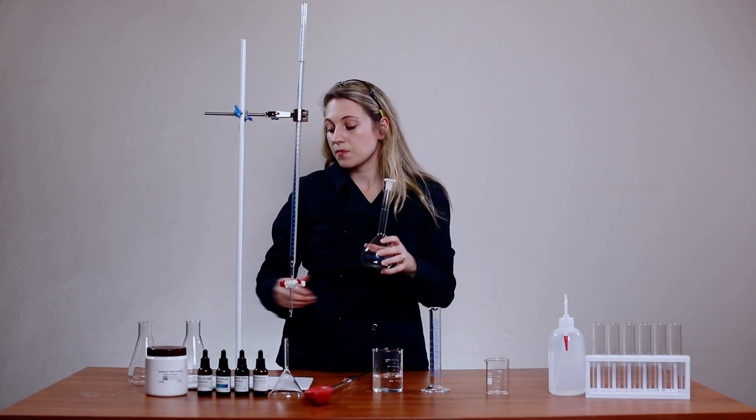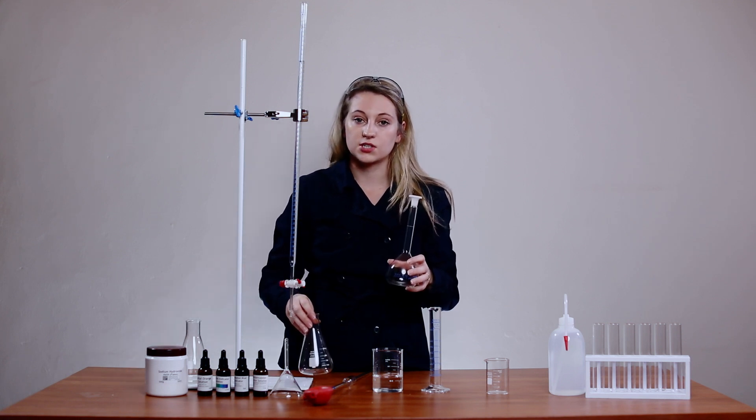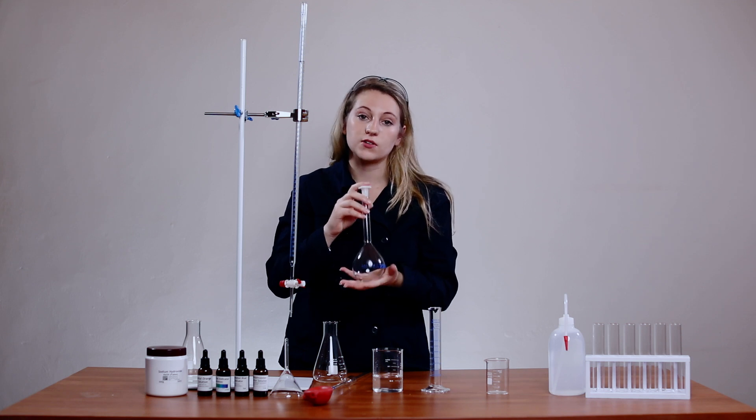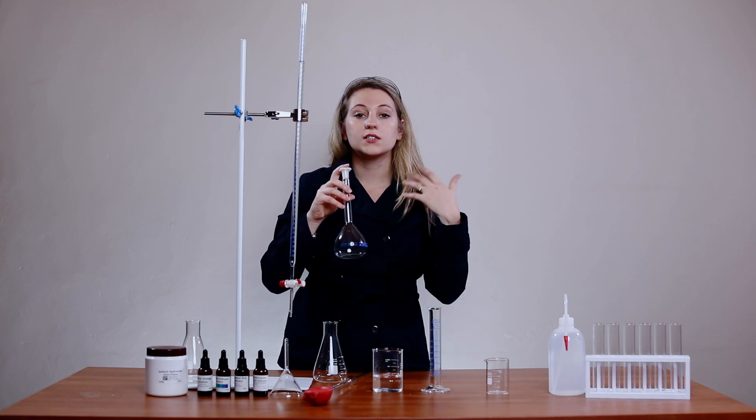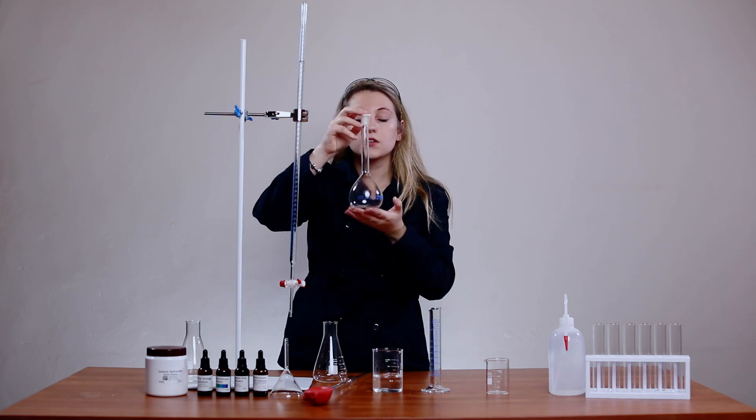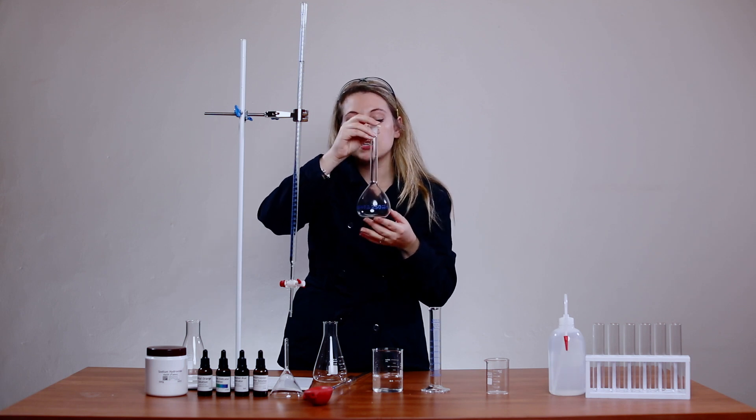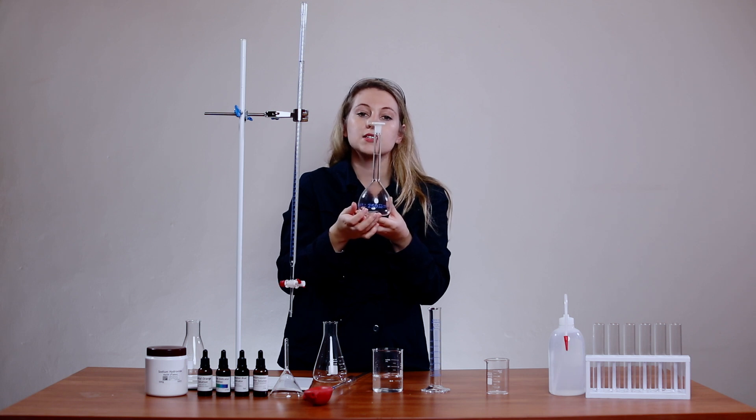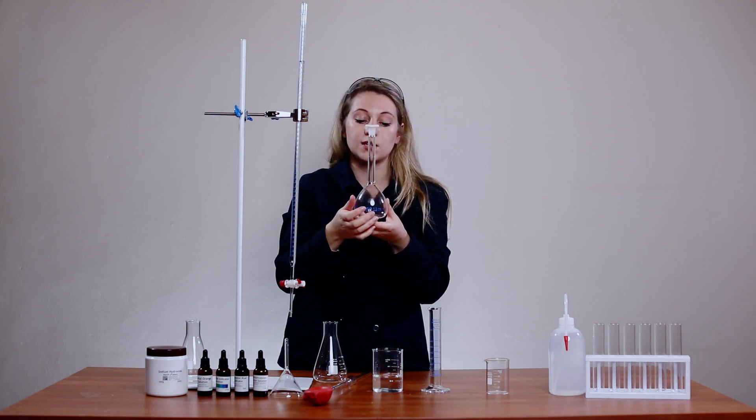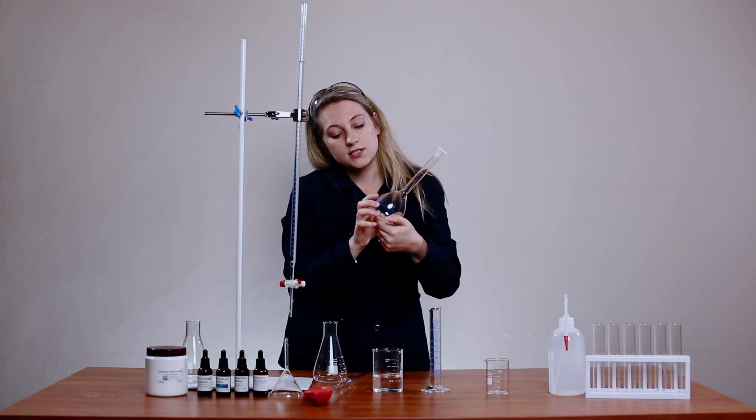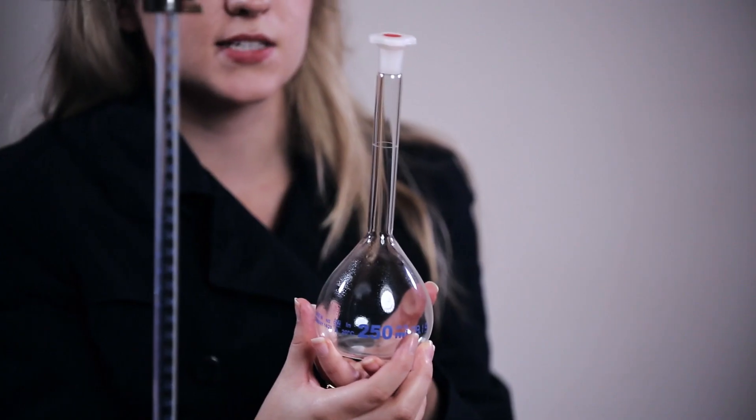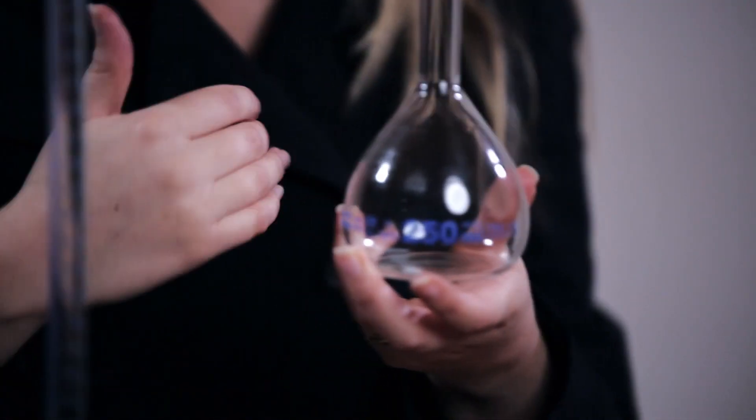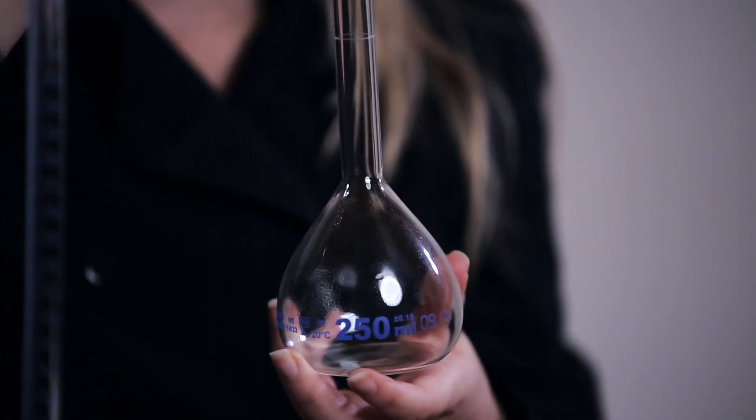When you want to prepare a solution, let's say a standard solution with a known concentration, or you just want to dilute an acid, we're going to use a volumetric flask. This volumetric flask is 250 milliliters or 250 cubic centimeters and it also has an accuracy of two decimal places, so when you record the value in volume you would say 250.00 cubic centimeters.